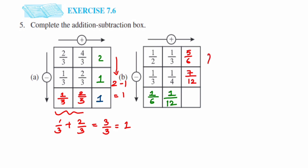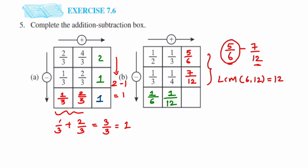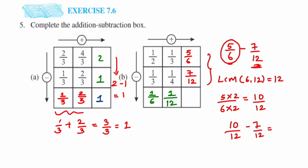For the second box's remaining corner, going downwards means subtraction: 5/6 minus 7/12. Taking LCM of 6 and 12, which is 12 — we only change 5/6: multiply by 2 to get 10/12. Then 10/12 minus 7/12 equals 3/12. Cancelling, 3 ones and 3 fours give 12, so the answer is 1/4.